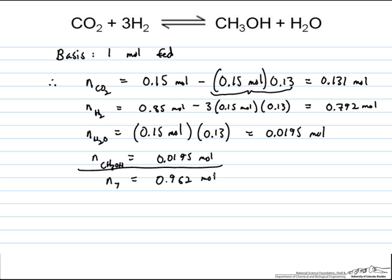Now what we need to do is convert the moles to mole fractions for each component. To do that, we just need to compute y of CO2, for example, which is equal to 0.131 moles over 0.962 moles total, and so the mole fraction once we've reached equilibrium is then 0.136. Similarly, we can do this for our other components.